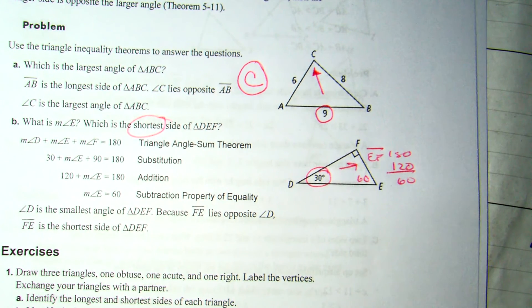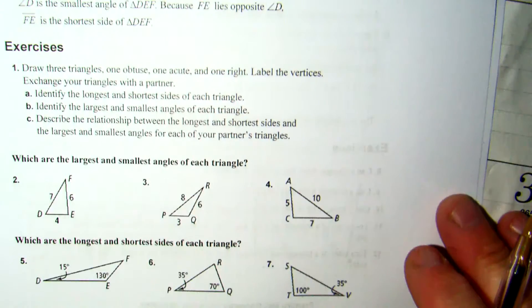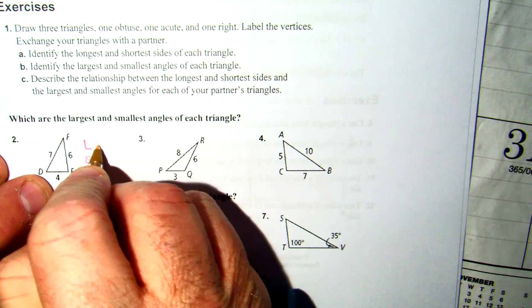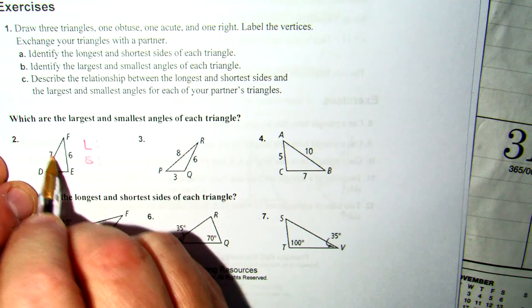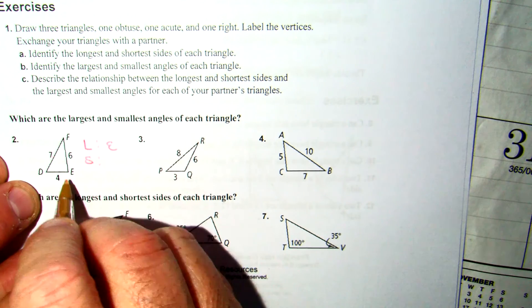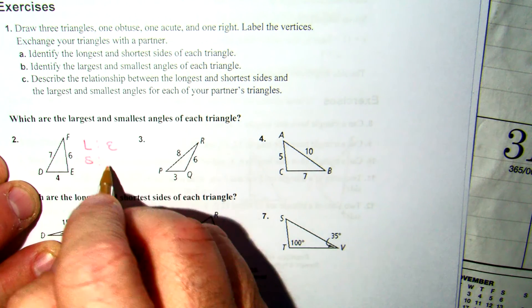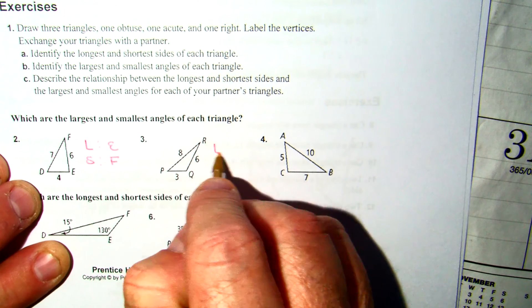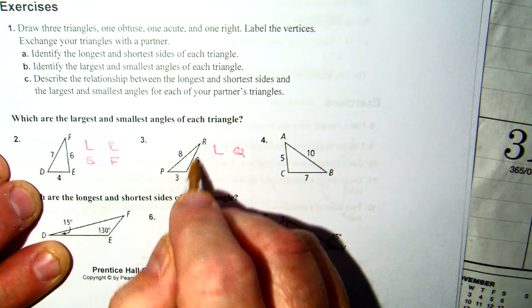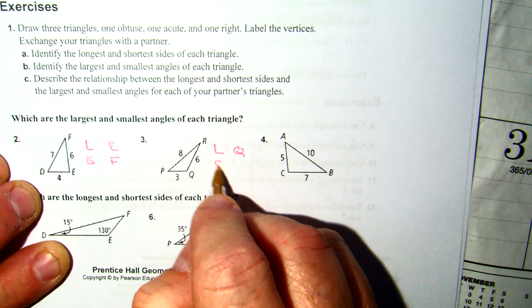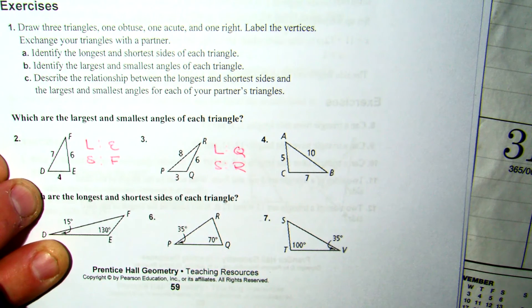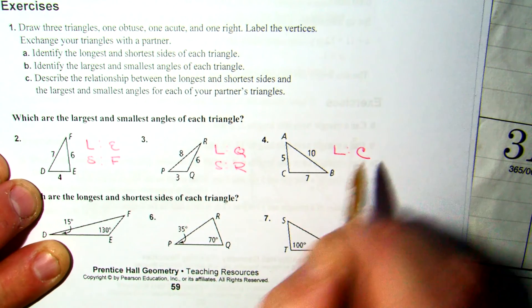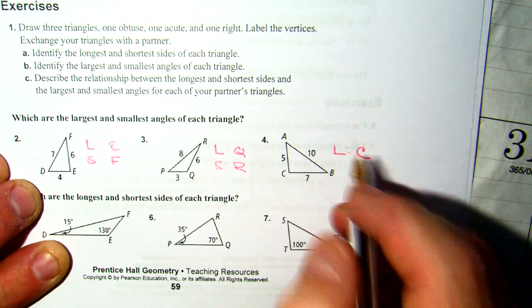We come down here. Same idea, just real quick speed round. Largest and smallest angles. The longest side is 7, so the largest angle would be E. Smallest side is 4, so the smallest angle would be F. Same thing here. 8 makes Q the largest. 3 makes R the smallest. And then finally 10 makes C the largest. 5 makes B the smallest.